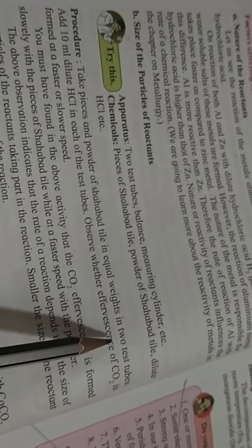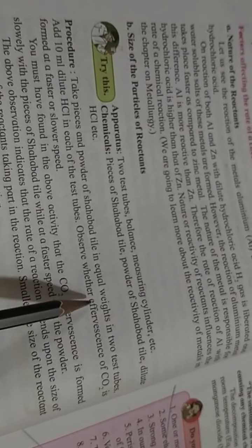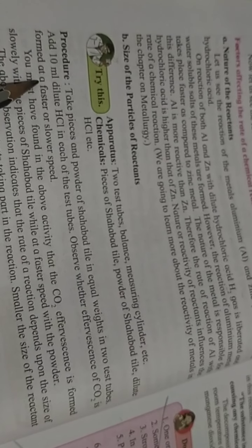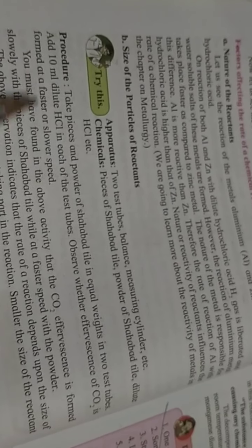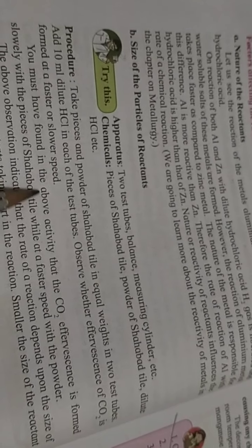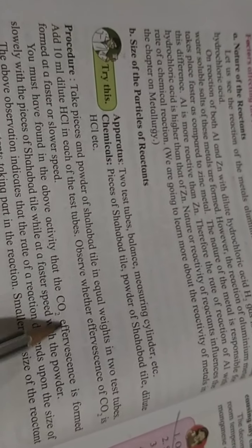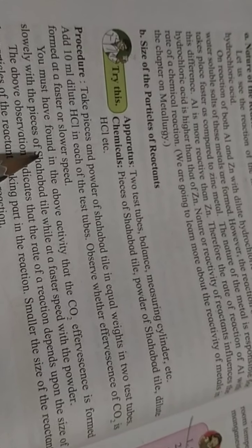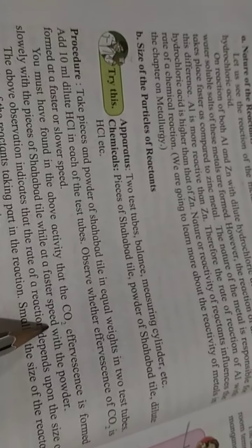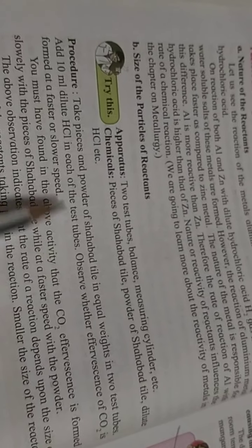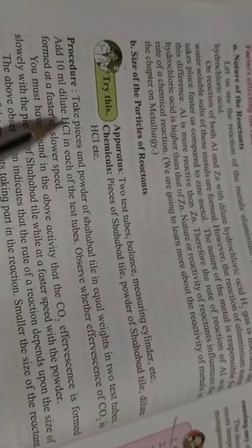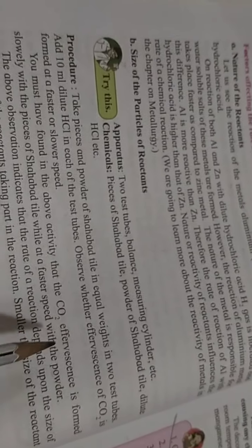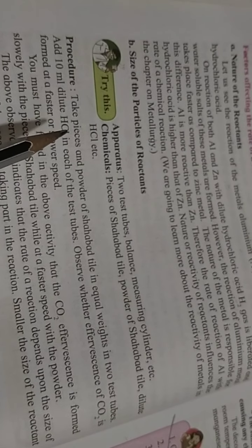Observe whether the effervescence, meaning the bubbles of carbon dioxide, is formed at faster or lower speed. You must have found in the above activity that carbon dioxide effervescence is formed slowly with the piece of sabat tiles while faster with the powder. In one test tube we added a piece and in another powder, and the powder's reaction is much faster compared to the piece.